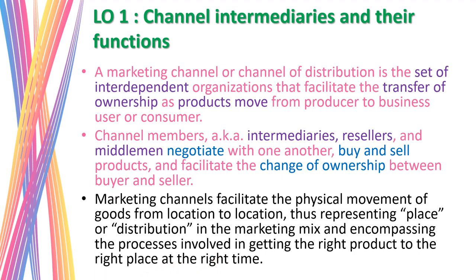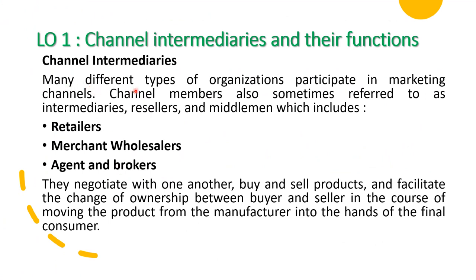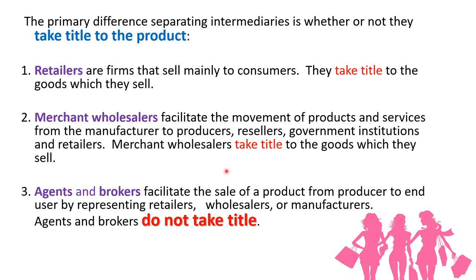Place encompasses the process involved in getting the right product to the right place at the right time so that consumers can get their products. There are many types of organizations that participate in the marketing channel — sometimes referred to as intermediaries, resellers, and middlemen. In this chapter we look into retailers, merchant wholesalers, as well as agents and brokers. The primary difference between these intermediaries is whether they take title to the product or not — meaning, do they own the product?